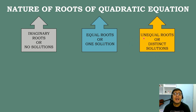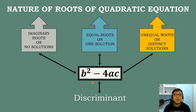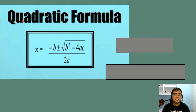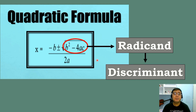And the last one is called unequal roots, or distinct solution — we have two roots for that quadratic equation. We can identify if the quadratic equation has imaginary, equal, or unequal roots using the formula of the discriminant: b squared minus 4ac. This formula came from the radicand of the quadratic formula.